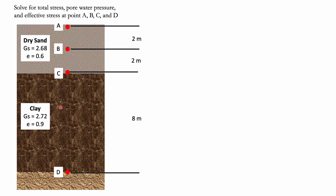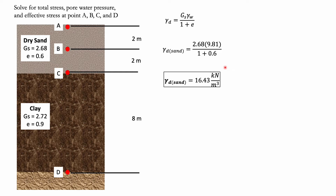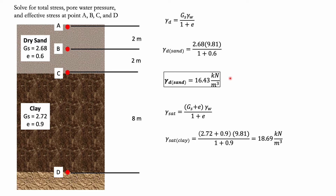First, we solve for the dry unit weight of sand: that is specific gravity times the unit weight of water all over 1 plus void ratio — 2.68 times 9.81 all over 1 plus 0.6 — giving a dry unit weight of 16.43 kN/m³. Then the saturated unit weight of clay: (specific gravity plus void ratio) times unit weight of water all over 1 plus void ratio — (2.72 plus 0.9) times 9.81 all over 1.9 — equals 18.69 kN/m³.